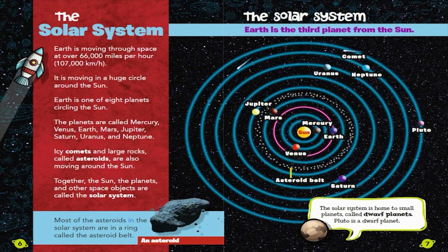Most of the asteroids in the Solar System are in a ring called the Asteroid Belt. The Solar System is home to small planets called dwarf planets. Pluto is a dwarf planet.